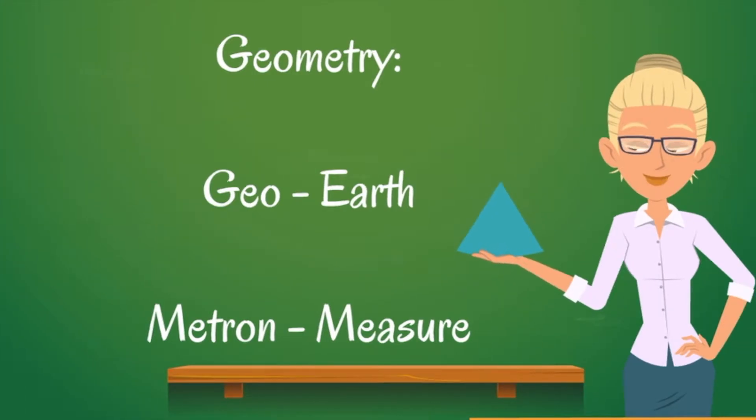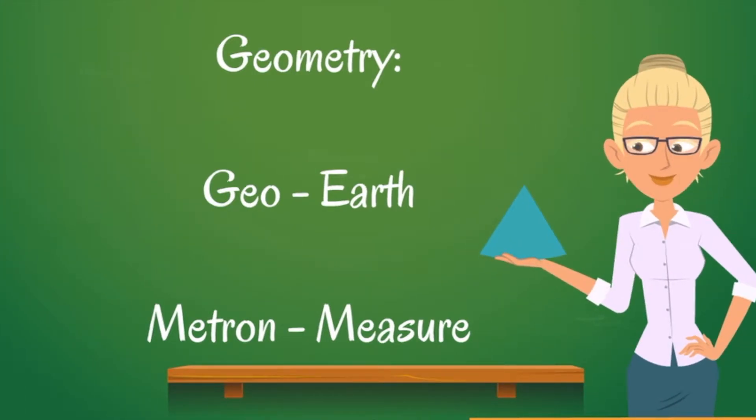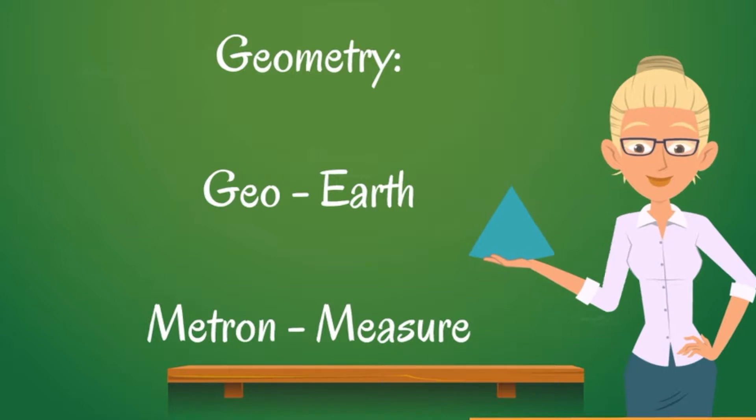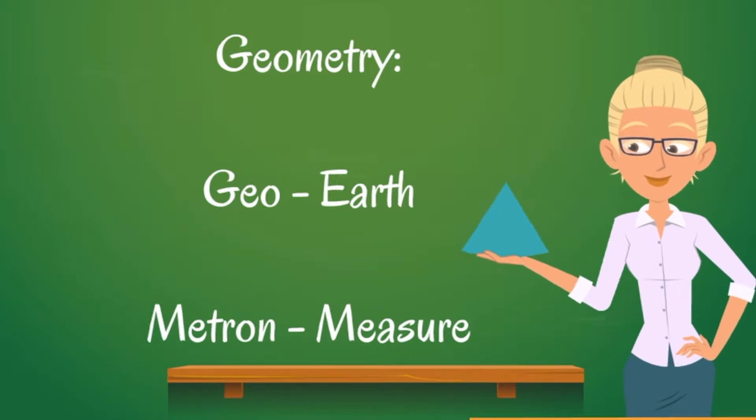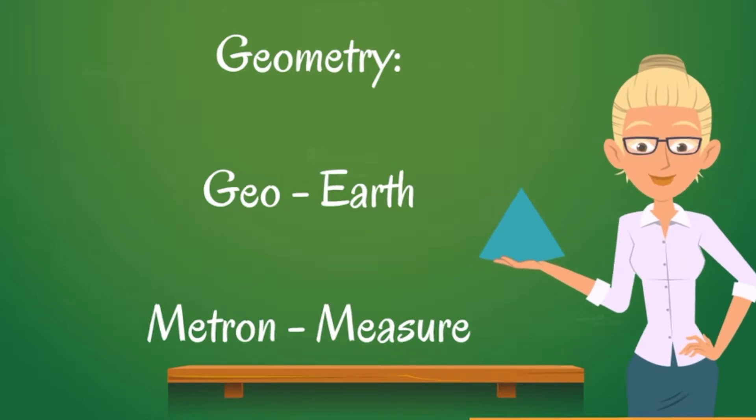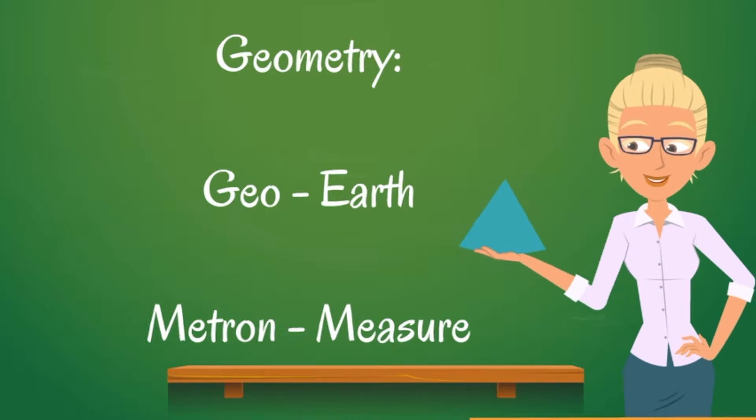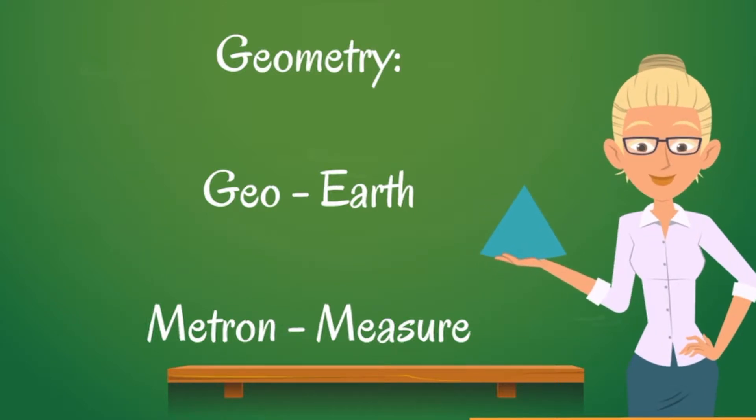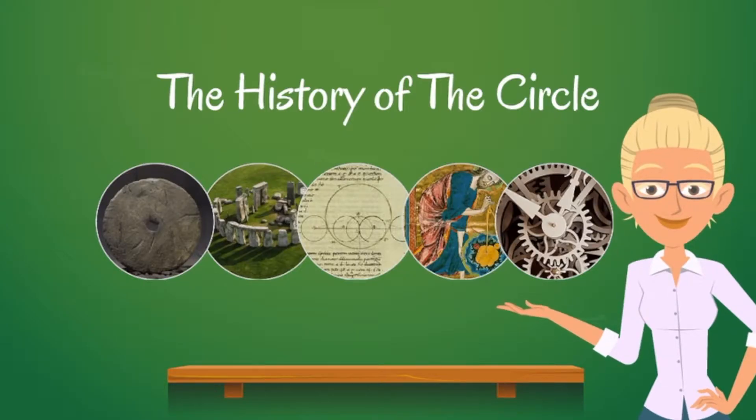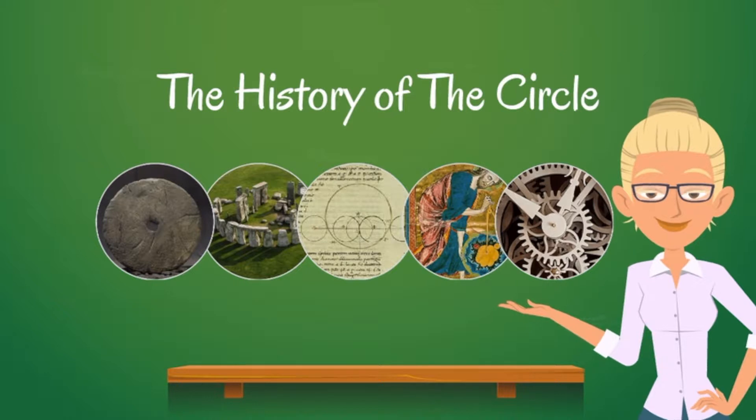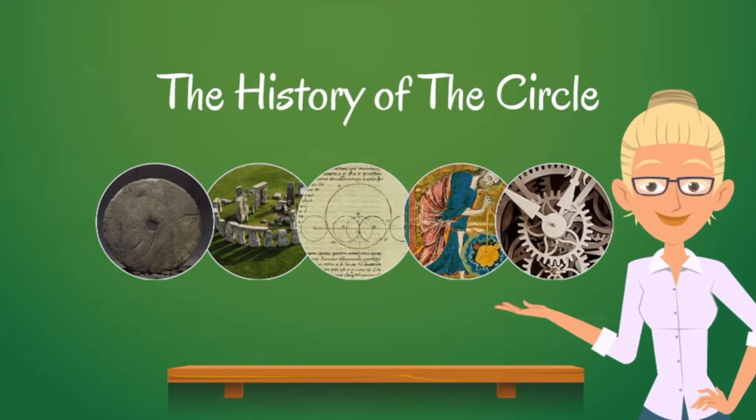To fully appreciate the importance of the circle we must first understand the meaning of the word geometry. Geometry is derived from the Greek word geo meaning earth and metron meaning measure. Given that the circle has been one of the most important shapes throughout history, from the invention of the wheel in Stonehenge to medieval mathematics and modern mechanics, we can see that no study of the earth and its measurements would be complete without studying the circle.